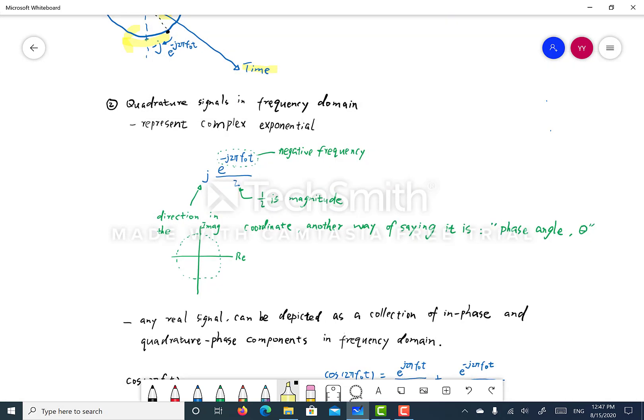So secondly, let's look at the mathematical expression for quadrature signals. We have j representing the direction of that vector, and the one-half in the denominator represents the magnitude of the vector, and e to the minus j 2 pi f0 t. Here, f0 is the frequency, and the minus sign in front of that j represents that it is a negative frequency.